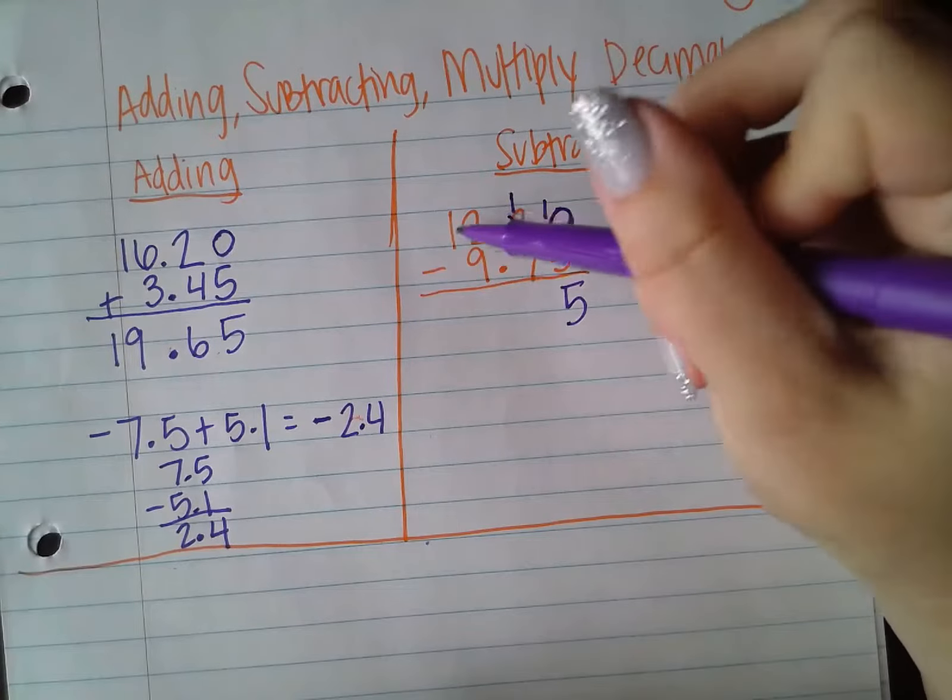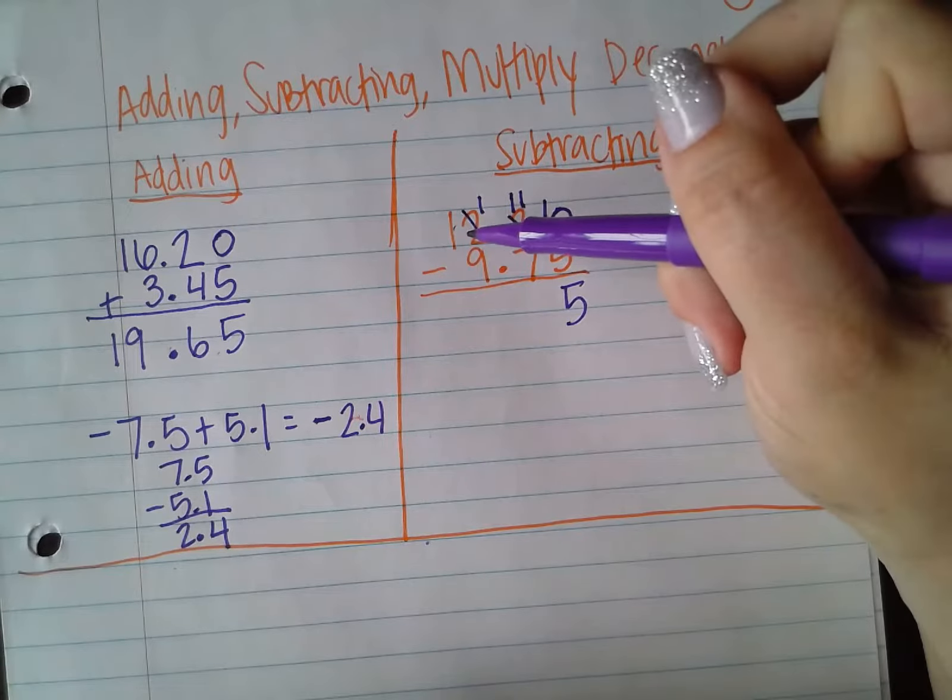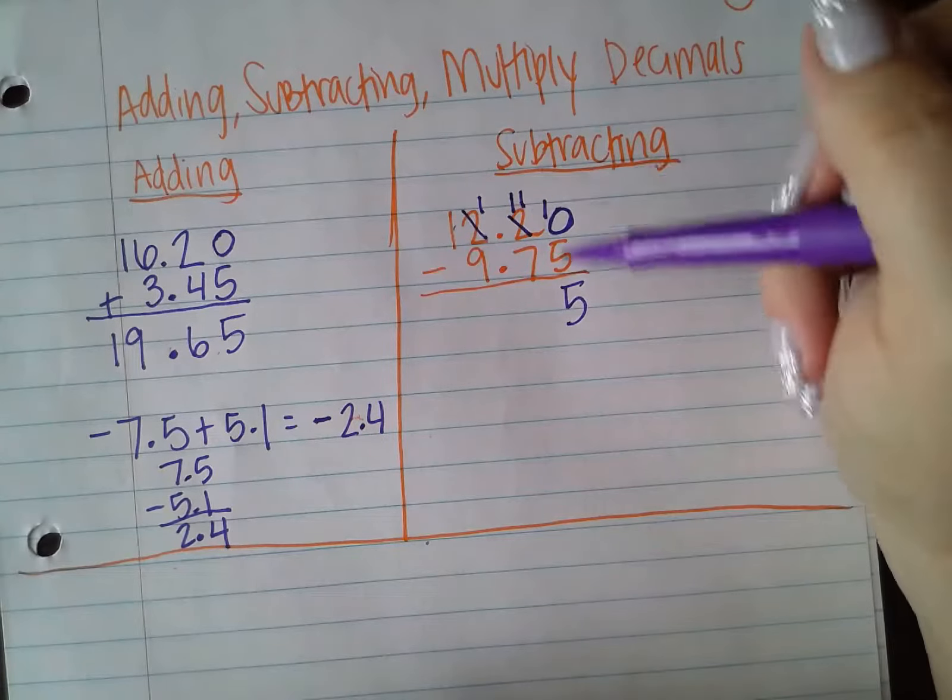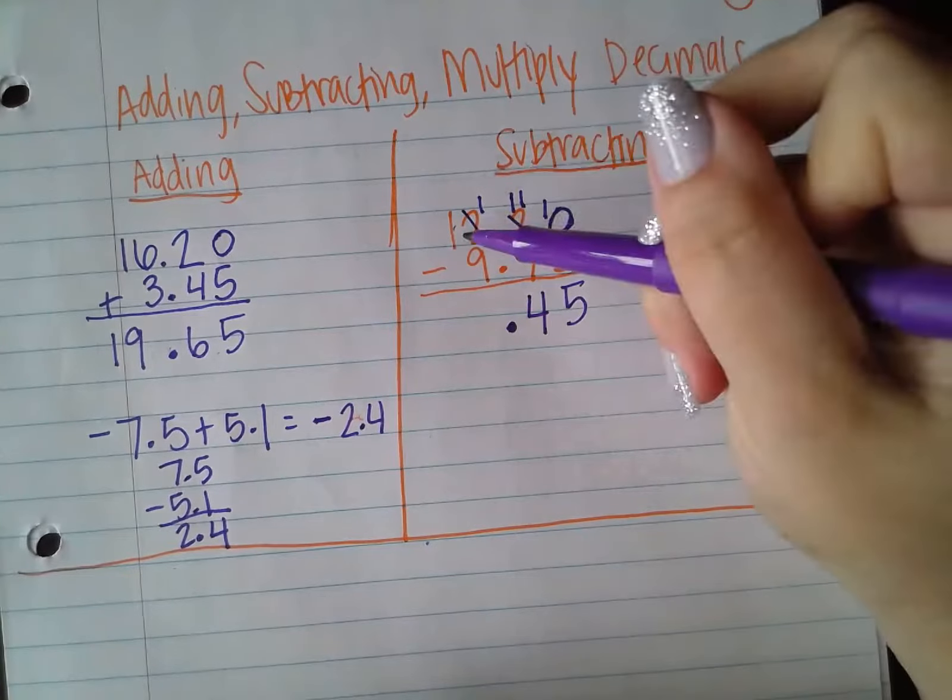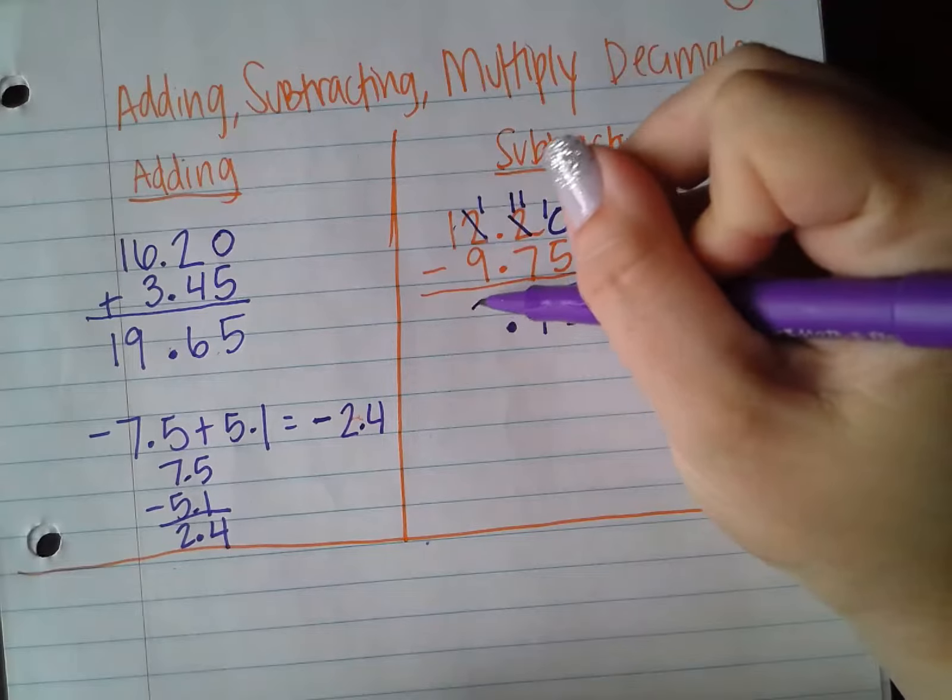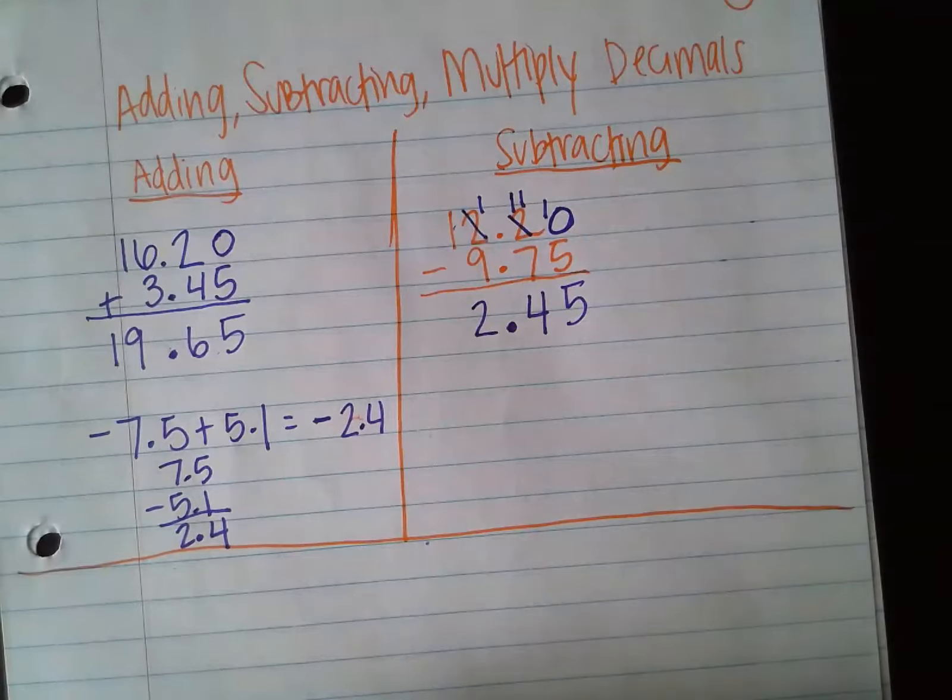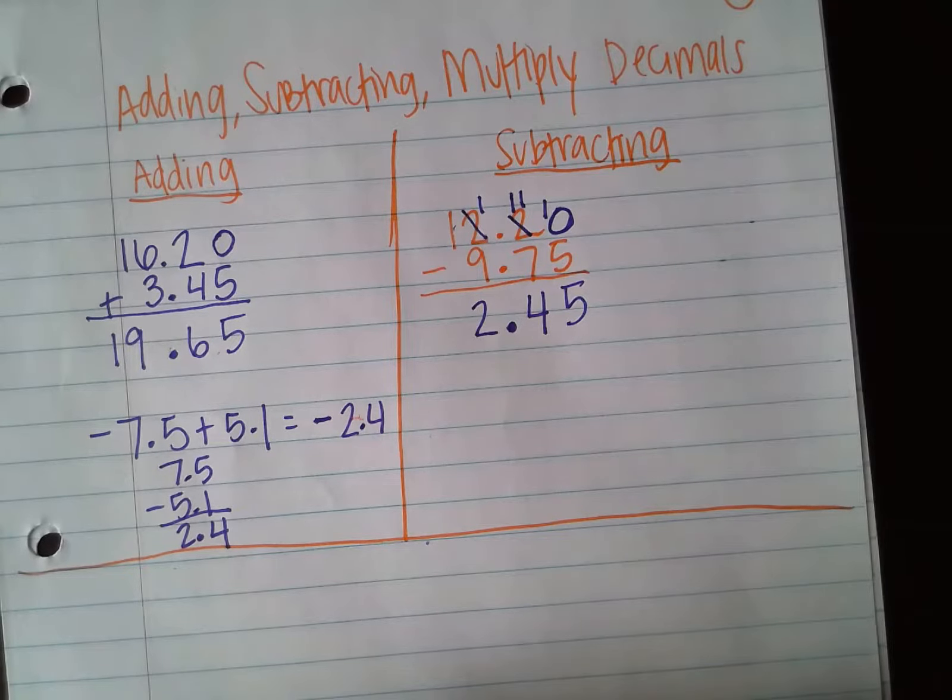1 minus 7, we're going to have to borrow again. So this 1 now becomes an 11. This 2 now becomes a 1. 11 minus 7 is 4. I keep my decimal point. And then if we look at this holistically, this is 11. 11 minus 9 is 2. So 12.2 minus 9.75 is equal to 2 and 45 hundredths or 2.45.